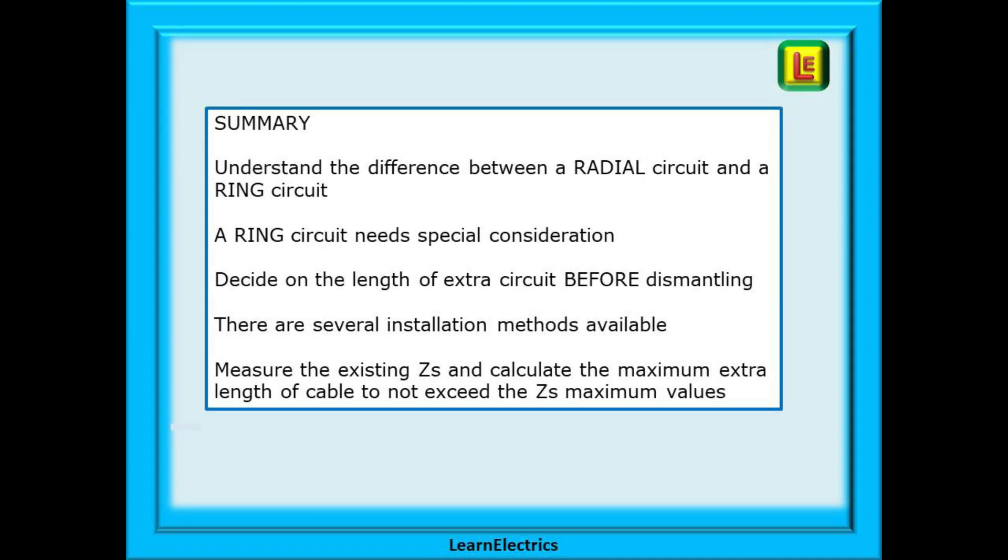So in summary take the time to understand the differences between a radial circuit and a ring circuit. A ring circuit needs special consideration because often the circuit breaker rating exceeds the maximum cable rating which would normally be an undesirable situation. Decide on the length of the extra circuit before dismantling. You may need to choose another route and another solution. There are several installation methods available and some have been shown here. Measure the existing ZS and then calculate the maximum extra length of cable so that you do not exceed the ZS maximum values. And don't forget there may also be the option of adding a complete new circuit and a separate breaker.